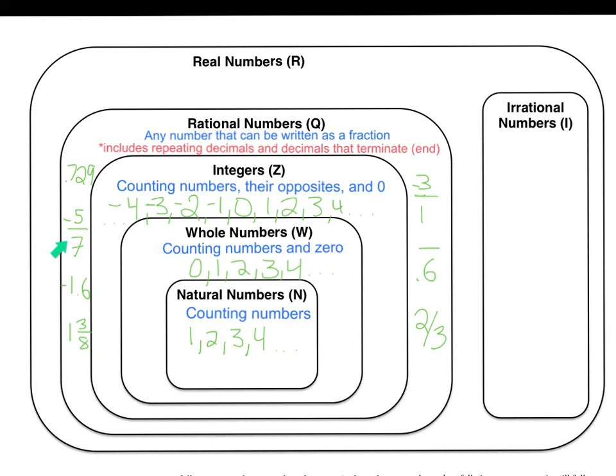We have negative 5 sevenths, which if you did out on a calculator, it would be 0.714285, 714285, 714285, but again that repeats, and we know right here that it can be written as a fraction. Negative 1.6 and 1 and 3 eighths. Those are all rational numbers.